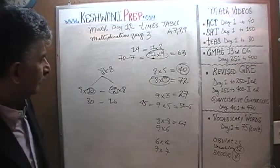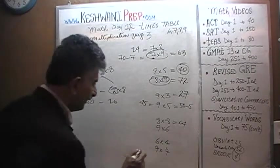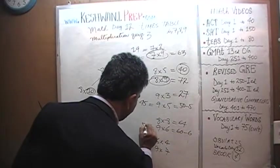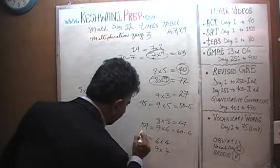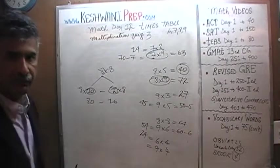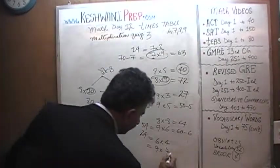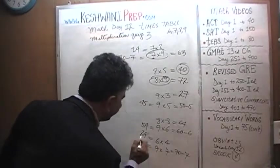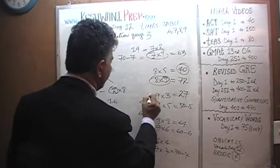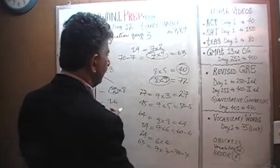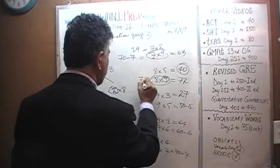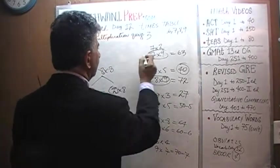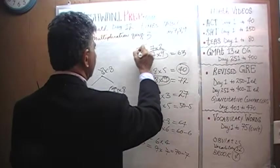How about 9×6? 9×6 are going to be same as 10×6 which is 60. Take away 1×6. 60-6 is 54. 6×4 are 24. And how about 9×7? 9×7 are same as 10×7 which are 70 and take away 7. 70-7 is 63.